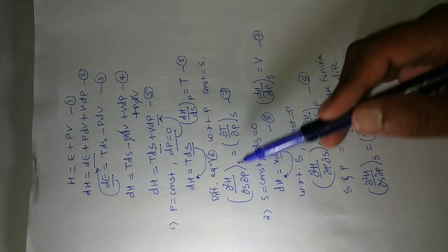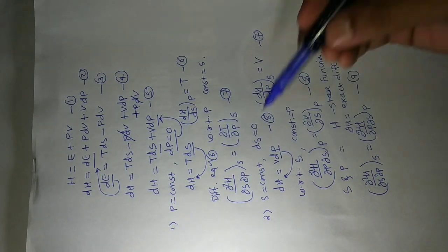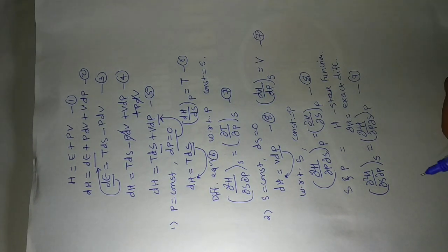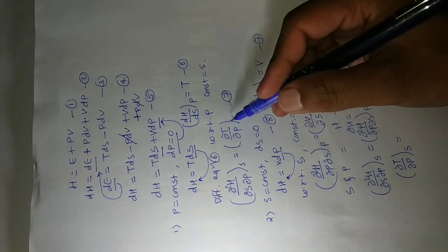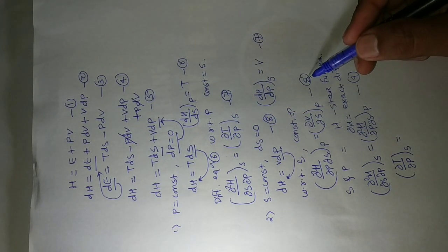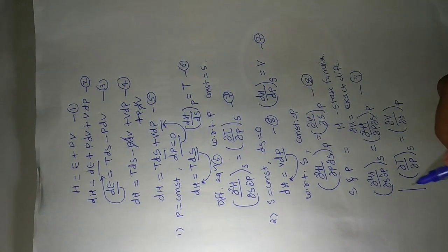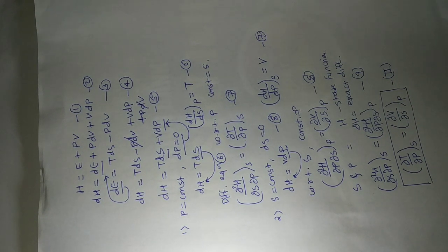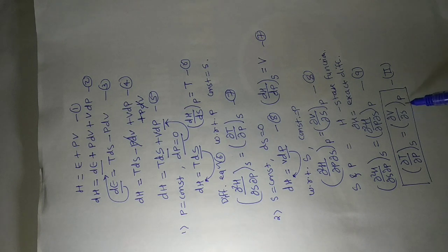Equating the right-hand sides of equations seven and eight using equation nine, we can write: the change in temperature with pressure at constant entropy equals the change in volume with entropy at constant pressure. That is, dT/dP|_S = dV/dS|_P. This is the second Maxwell thermodynamic equation.